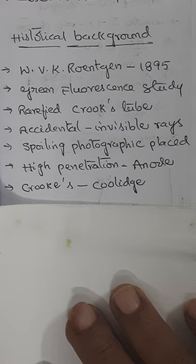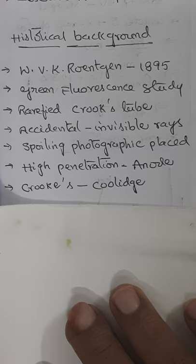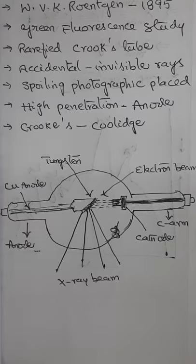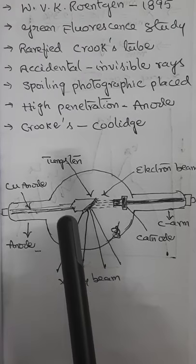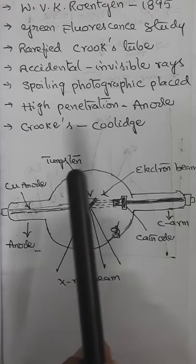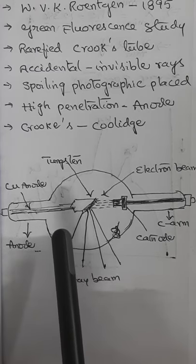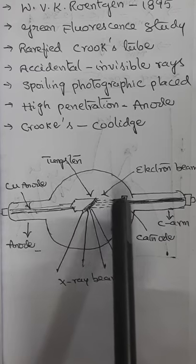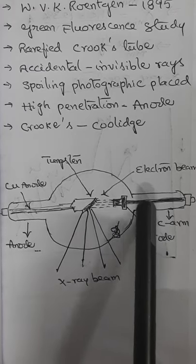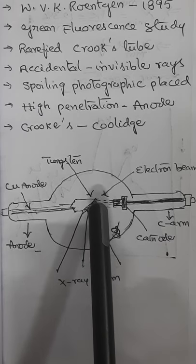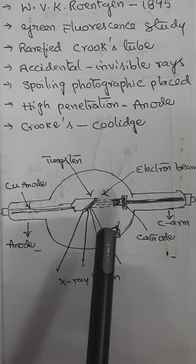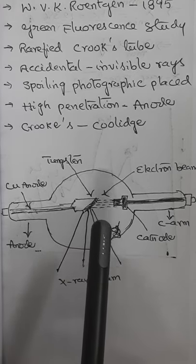The Crookes tube was later modified as the Coolidge X-ray tube with controlled intensity and hardness, which are now commonly used for diagnostic purposes in all X-ray clinics. Schematically, the experimental setup of the Coolidge X-ray tube consists of an air-exhausted tube with a copper anode arm and a tungsten filament cathode. An electron beam strikes the tungsten target at 45 degrees and produces an X-ray beam. Based on this setup, Röntgen identified significant properties of X-rays.